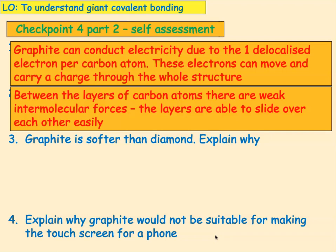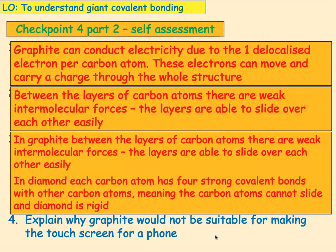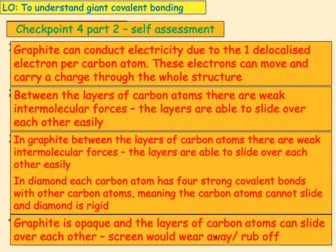Graphite is softer than diamond — explain why. In graphite, between the layers of the carbon atoms there are weak intermolecular forces and the layers are able to slide over each other easily, whereas in diamond each carbon atom has four strong covalent bonds with other carbon atoms, meaning the carbon atoms cannot slide and diamond is rigid and hard. Explain why graphite would not be suitable for making the touch screen for a phone: graphite is opaque — meaning you can't see through it — and the layers of carbon atoms can slide over each other so the screen would wear away and it wouldn't be transparent.